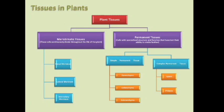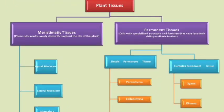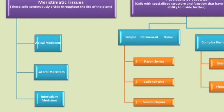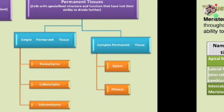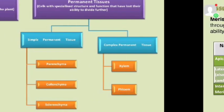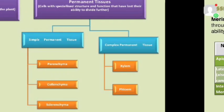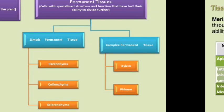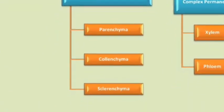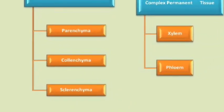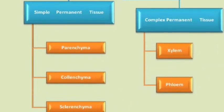The different types of plant tissues are: first, meristematic tissue, and second, permanent tissue. Meristematic tissues are of three types: apical meristem, lateral meristem, and intercalary meristem. Coming to permanent tissues, the cells are specialized, having specialized structure and functions, and have lost their ability to divide further. Simple permanent tissues are of three types: parenchyma, collenchyma, and sclerenchyma. Complex permanent tissues are of two types: xylem and phloem.